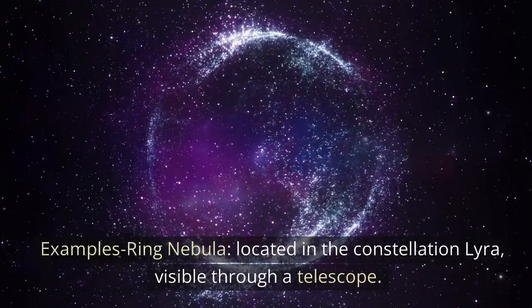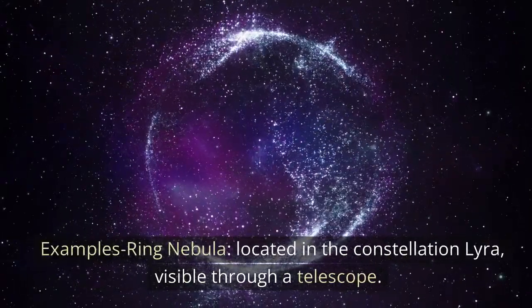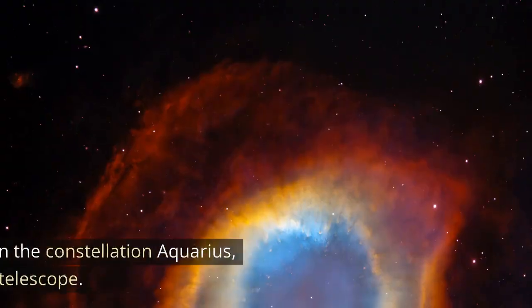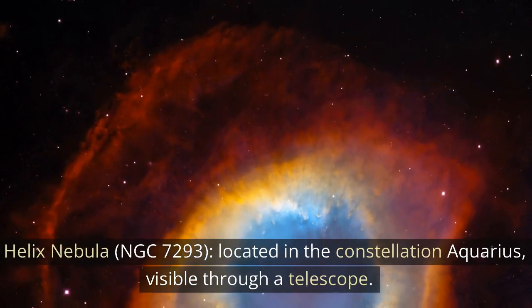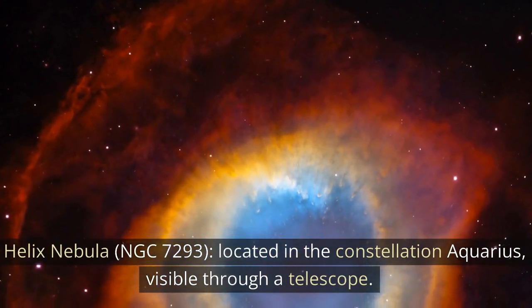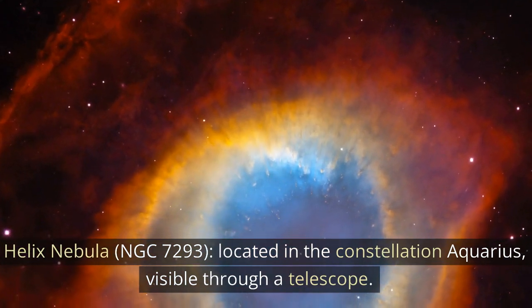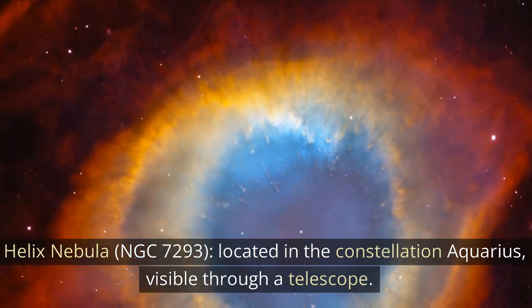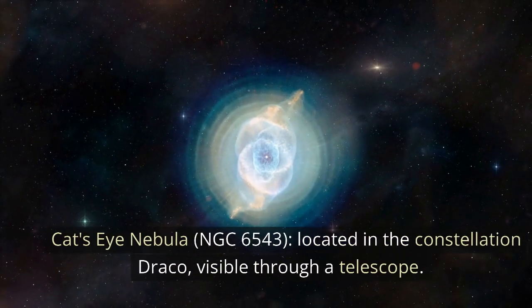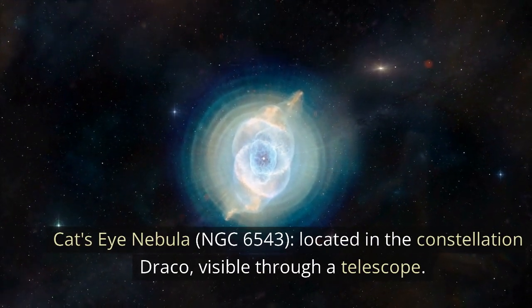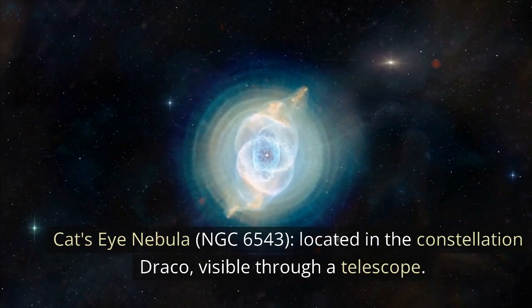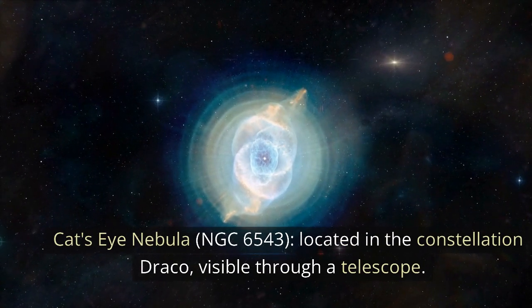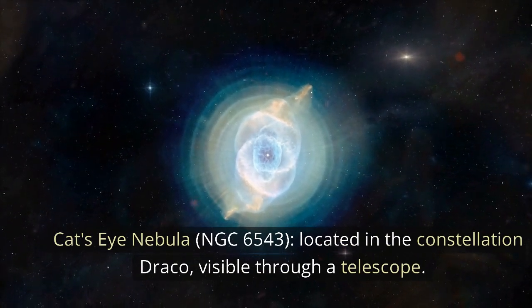Examples: Ring Nebula, located in the constellation Lyra, visible through a telescope. Helix Nebula, NGC 7293, located in the constellation Aquarius, visible through a telescope. Cat's Eye Nebula, NGC 6543, located in the constellation Draco, visible through a telescope.